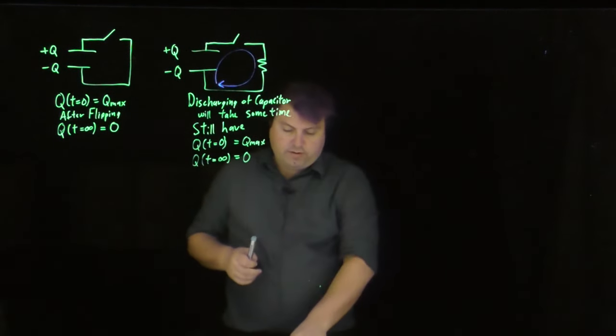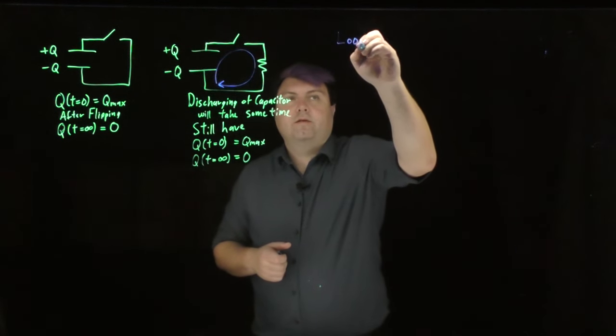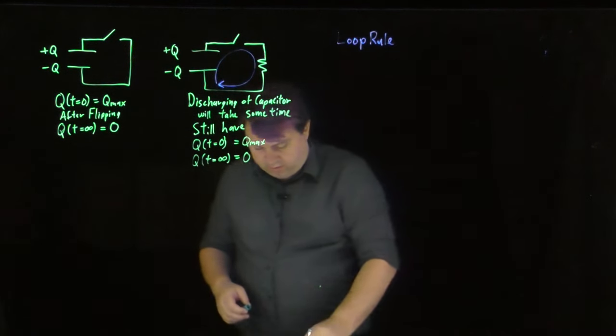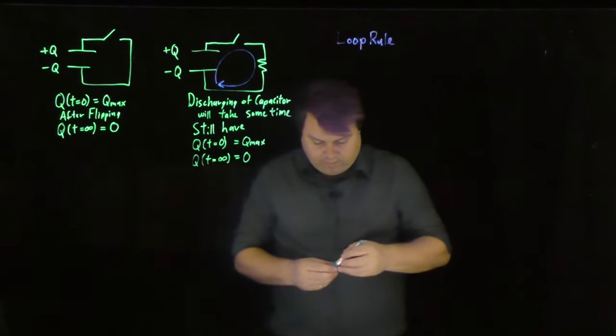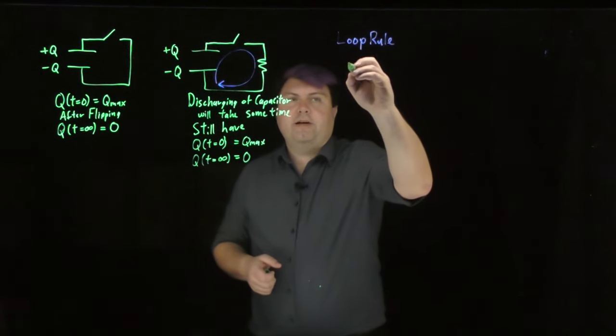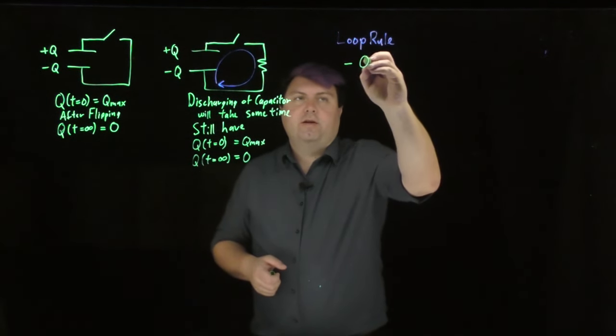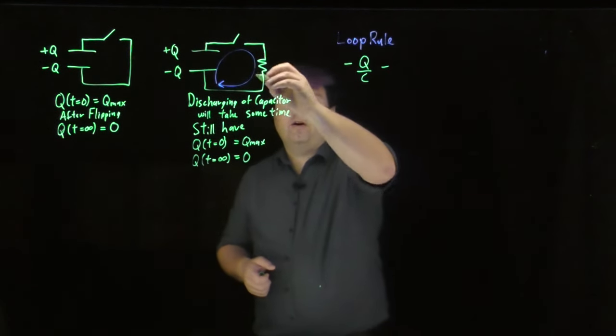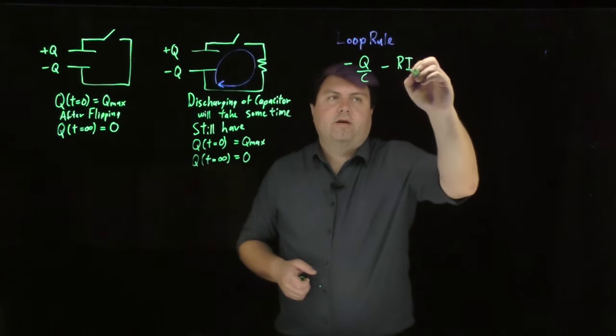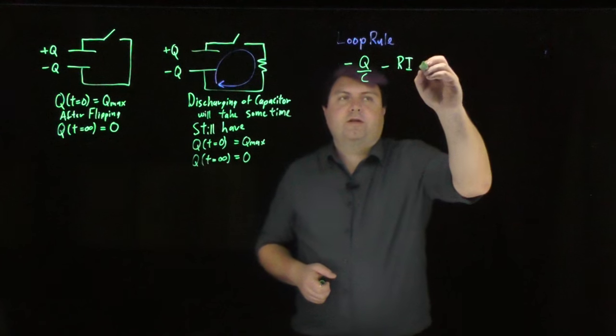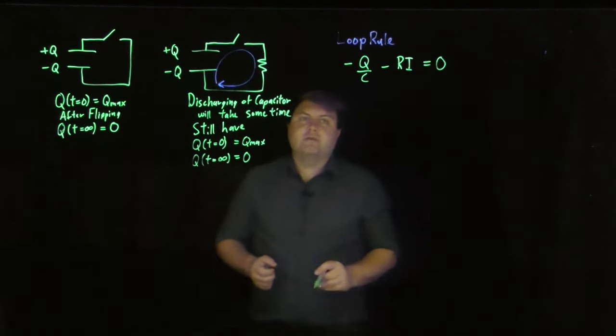And if we do that, then we have our loop rule. So the voltage of our capacitor is going to be negative q over c. And the voltage of our resistor is going to be negative r times i. And these are the only two elements when the flip is switched. And so this would be equal to zero.